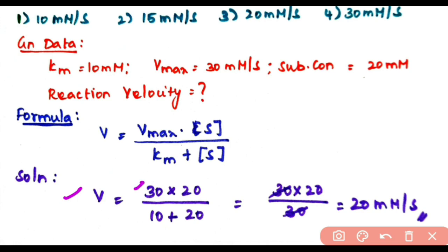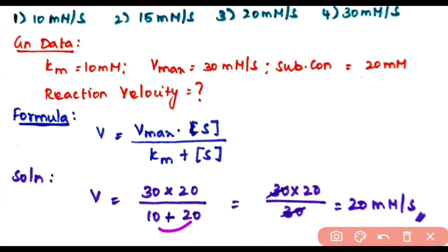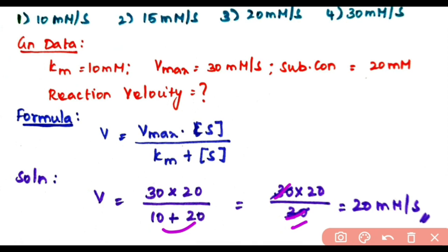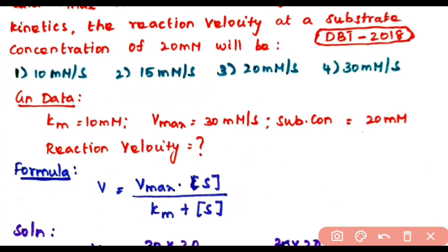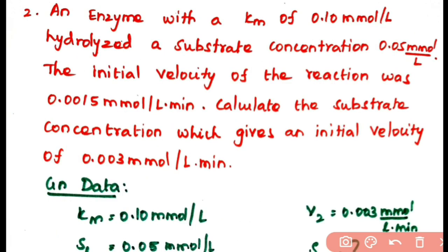Reaction velocity v = (30 millimolar per second × 20 millimolar) / (10 millimolar + 20 millimolar) = 30 × 20 / 30 = 20 millimolar per second. The answer is option 3: 20 millimolar per second. This is a DBT 2018 question. Our second problem: an enzyme with Km of 0.10 millimolar per liter hydrolyzes a substrate.